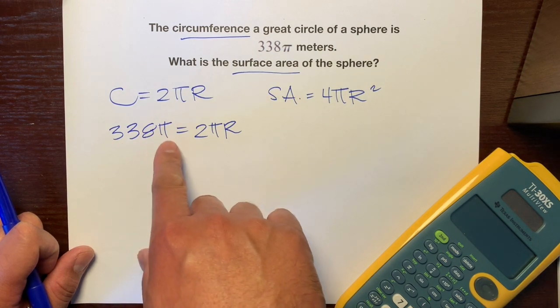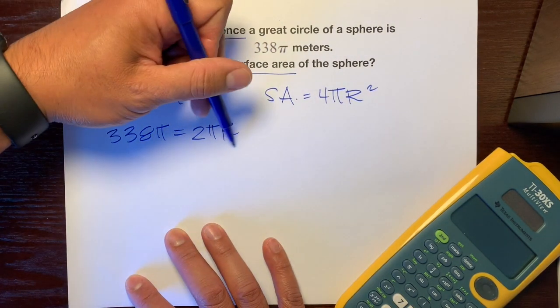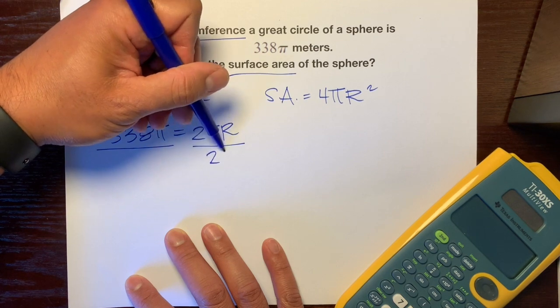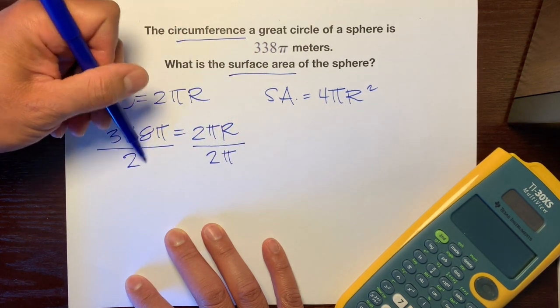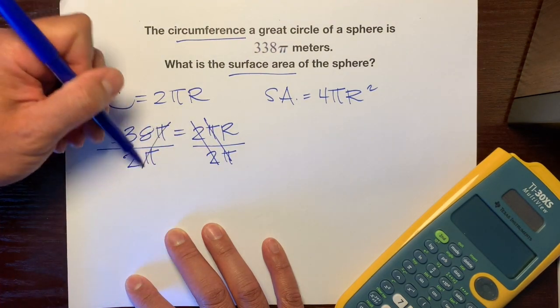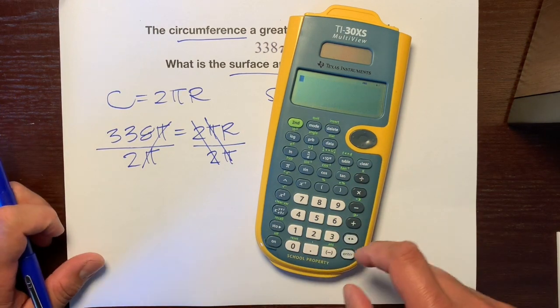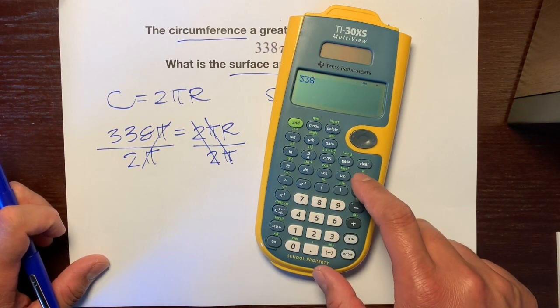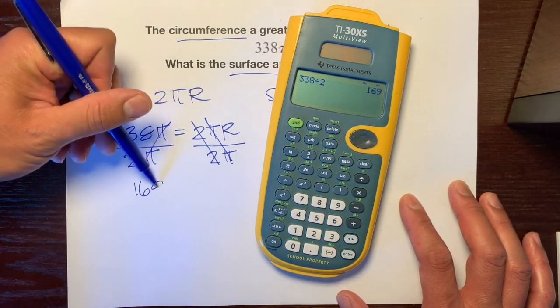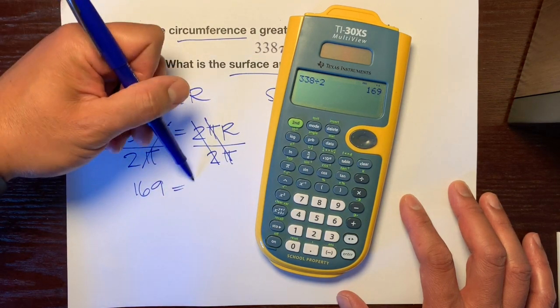So we have 338π = 2πr. Opposite of multiplication is division. We want to isolate r, so we're going to divide both sides by 2π. The 2's cancel each other out, the π's cancel each other out. And let's use our calculator. 338 divided by 2 is 169. So our radius is 169.